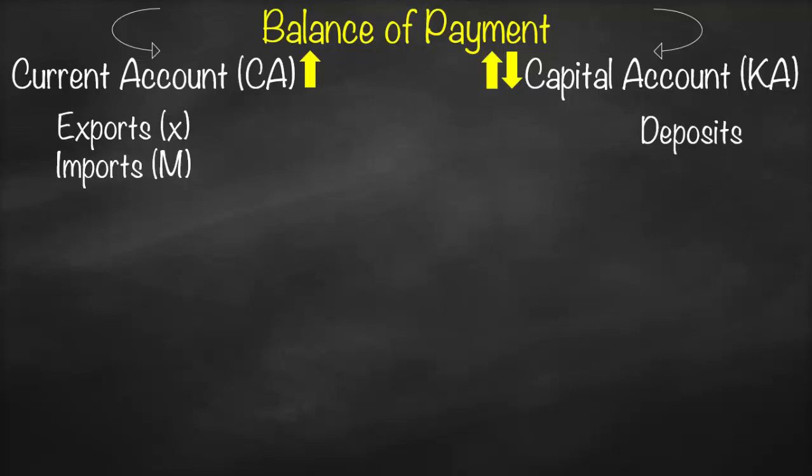If you put a deposit in a Swiss bank, one day you will withdraw that money back — so that is a two-way transaction and will appear under capital account. Similarly, if a multinational corporation takes an international loan from a British bank, it will need to repay that loan — so the loan is also a two-way transaction and appears under capital account.